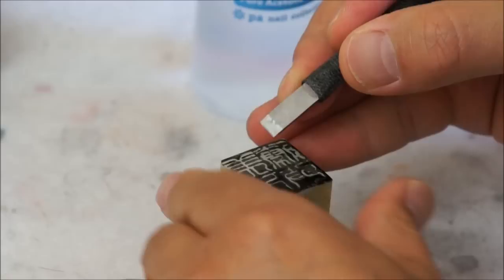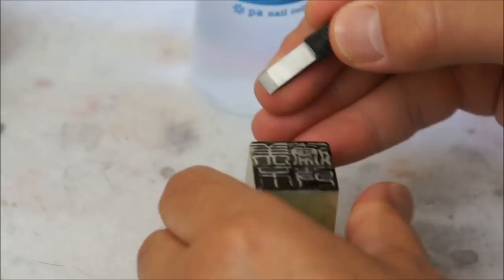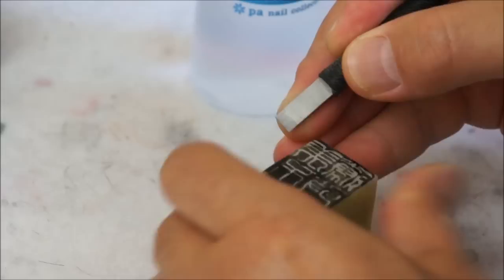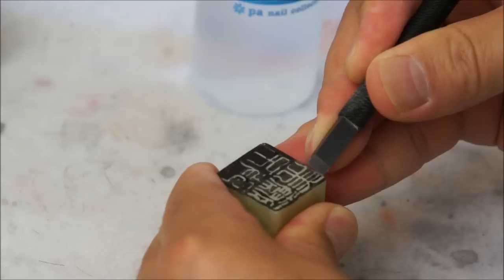You already have some natural, I call it antique taste. So I start from, you don't have to follow the writing sequence. However, I will do from the first character, Mei, meaning beauty. So I use the native carving style.